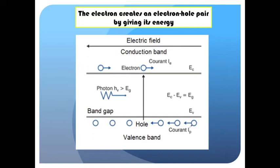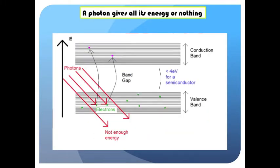This electron hole pair can be used to generate current by applying a voltage on it. If the energy of the photon was too low to create an electron hole pair, it will go through the material. That's why some materials are transparent.